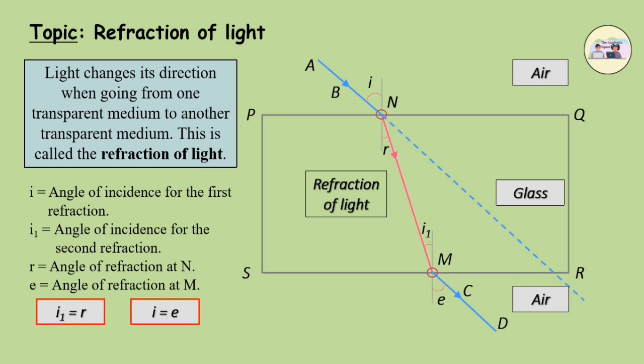On both the parallel sides PQ and RS of the glass slab, the change in the direction of the light ray is equal but in opposite directions. Thus, the light ray MD emerging from the glass slab is parallel to the incident ray AN on the side PQ of the slab. But the emergent ray is somewhat displaced with respect to the incident ray.